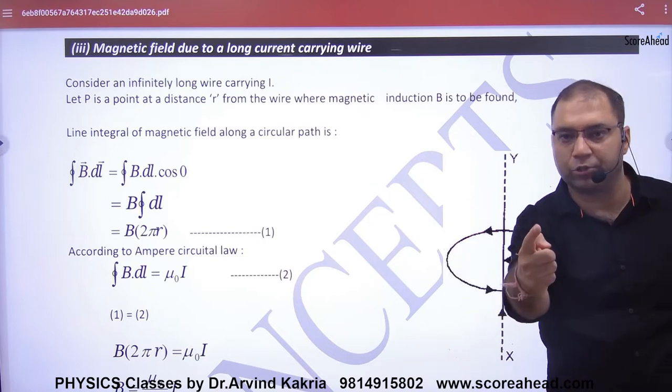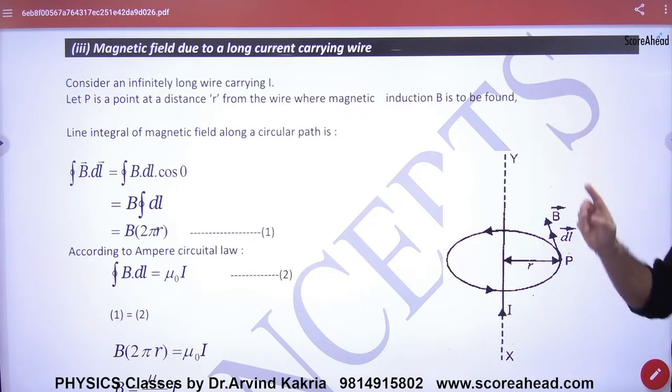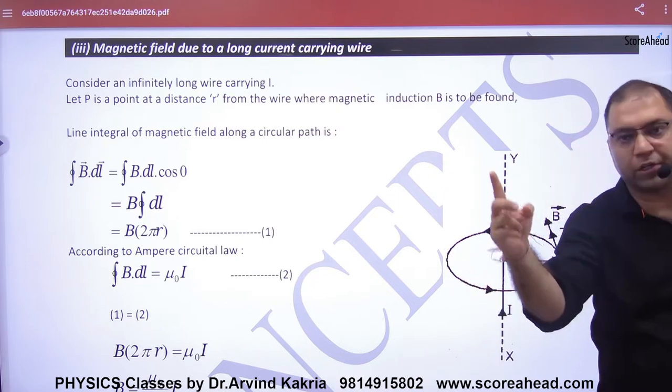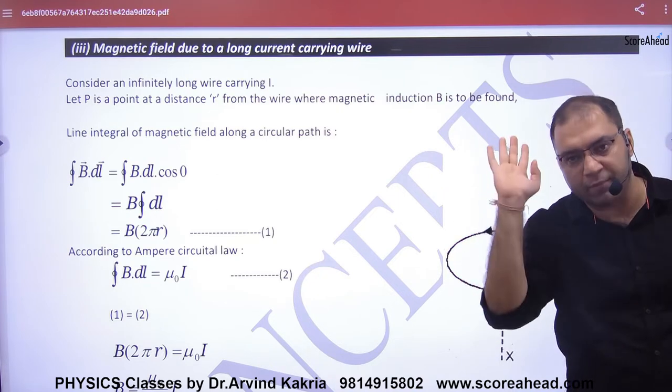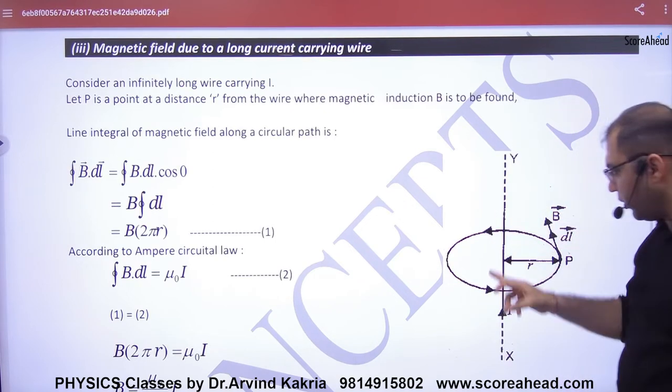You have to take out a closed path. This line is the current-carrying wire, infinite. You take out a closed path - an imaginary path, point number one, clear? This is B and dl in one direction, so what will it be?